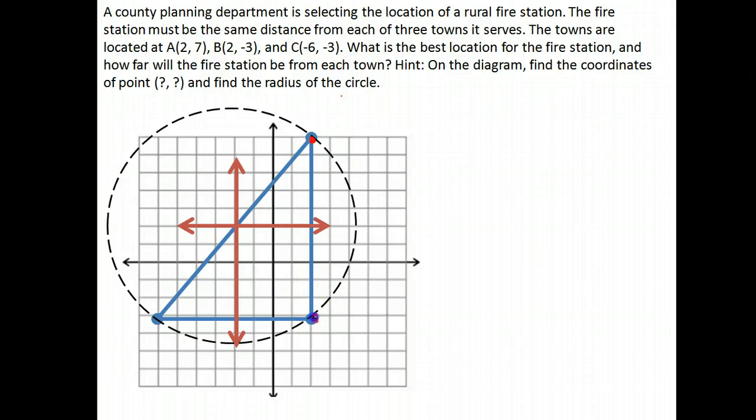The towns are located at (2,7), (-3), and (-6,-3). What's the best location for the fire station and how far will that station be from each town? The hint is to find the coordinates of the center on the diagram and then find the radius of the circle.